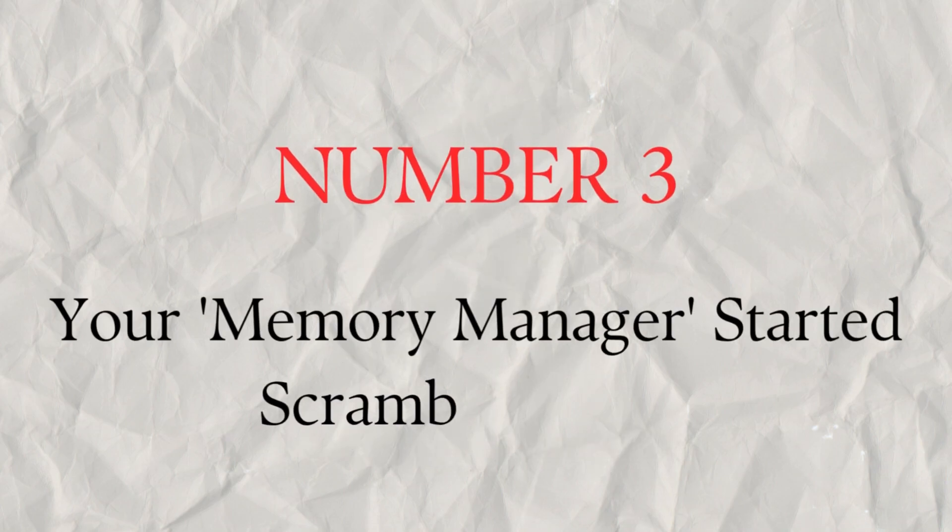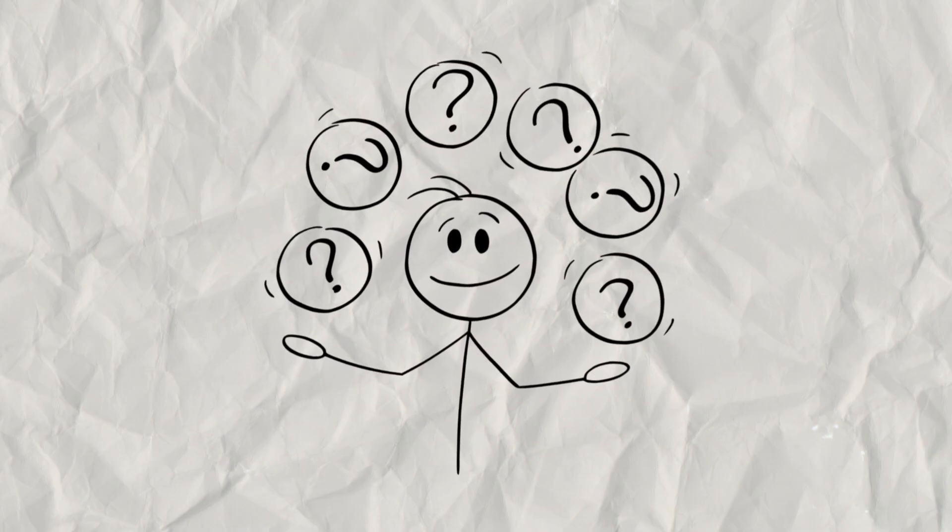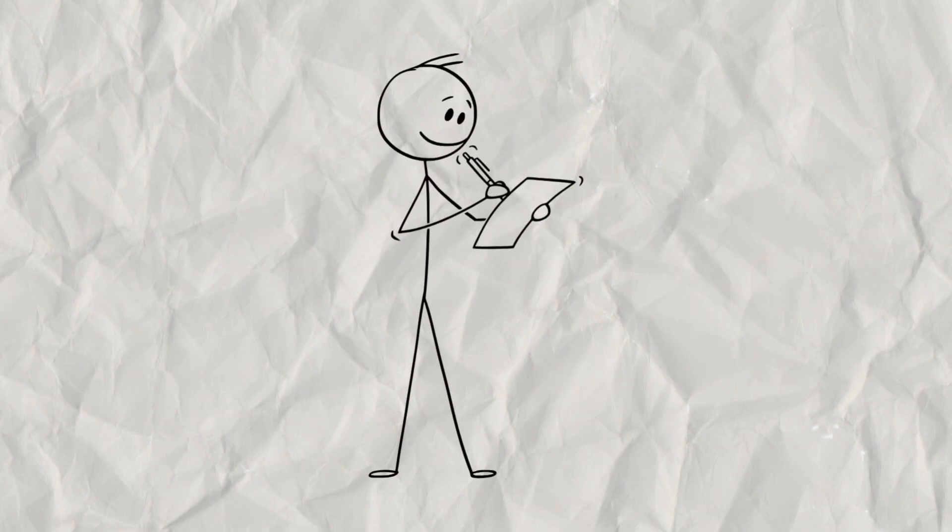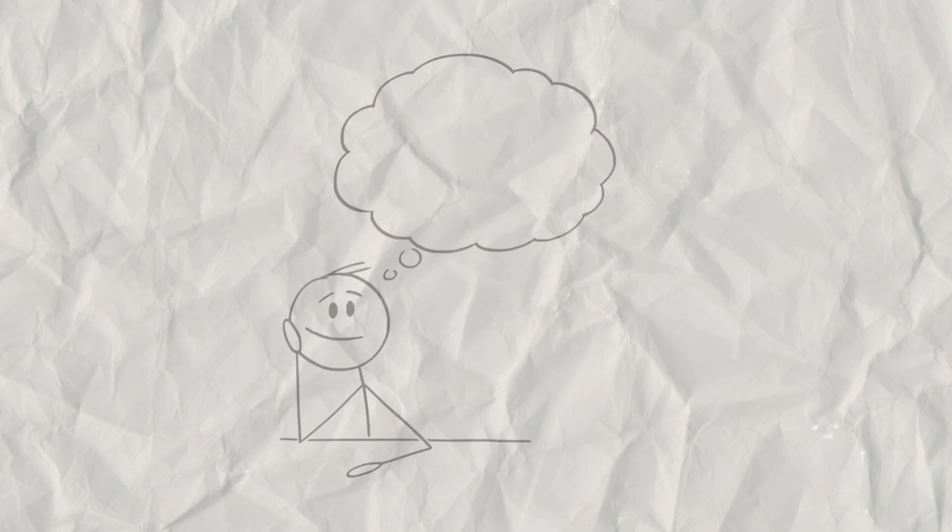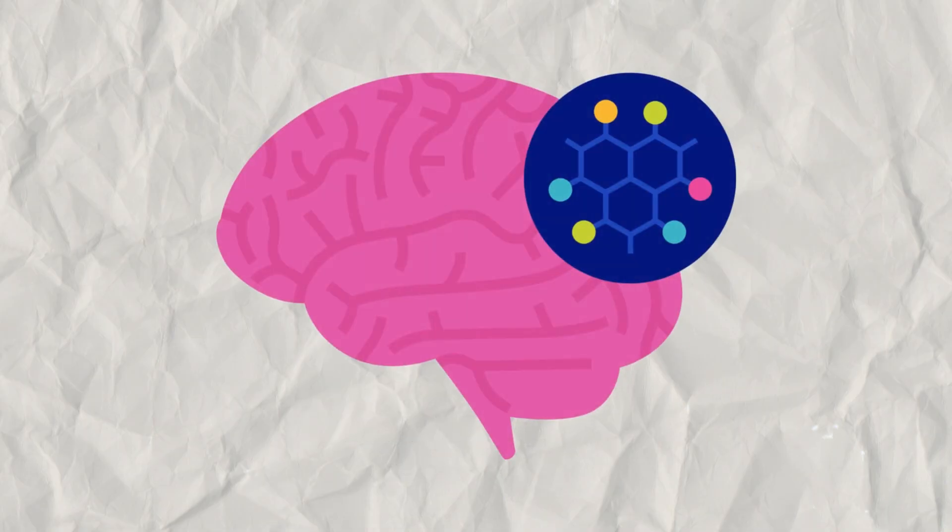Number three, your memory manager started scrambling files. Let's talk about the hippocampus. This brain structure is your memory manager. Its job is to take your daily experiences and file them away neatly. It puts a time stamp on them. This happened on Tuesday. It was in the past. It's over now. It creates a story, a timeline.